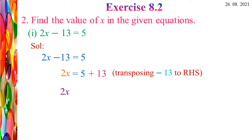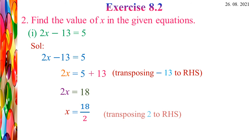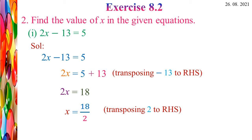So the equation 2X = 5 + 13, giving 2X = 18. So X = 18/2. Transposing 2 to the RHS, it becomes division. So X = 18/2. Cancel the common factors: 9 twos are 18. So X = 9. The X value is 9.